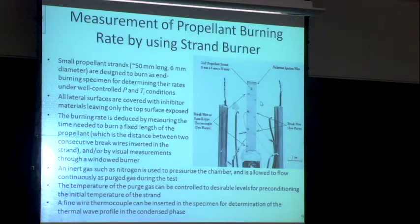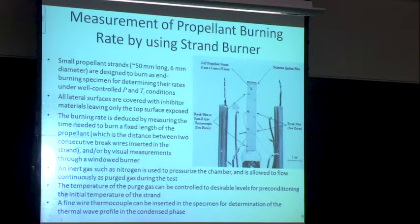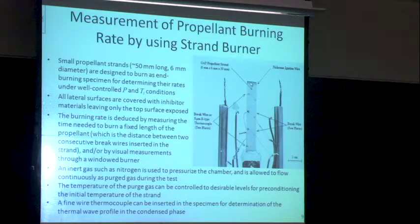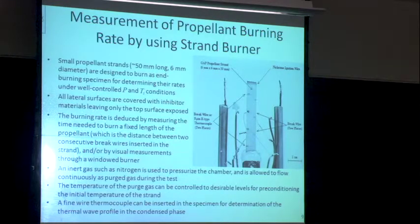Here's an example of a strand sitting on a mount in a burner. Typical size is about 6 mm in diameter and 50 mm in length, so one can go through the initial transient ignition process and measure a steady-state burning process. Ignition occurs with a nichrome wire at the top. In some systems, a flame can spread down the side faster than the regression rate, so an inhibitor — like paint or nail polish — is applied as a thin coating around the outside to prevent that.